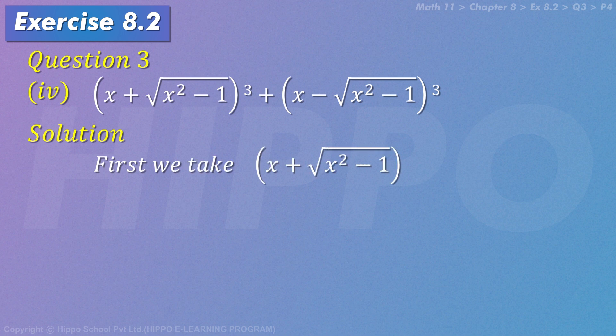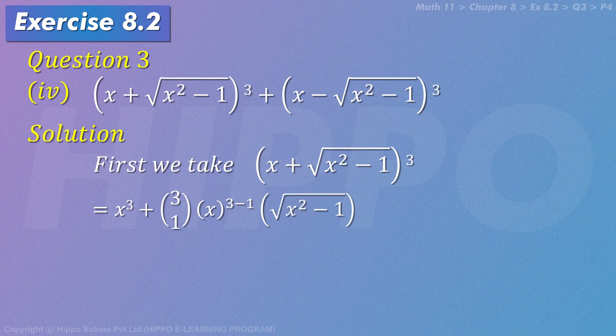So (a + b)³, that's a³ + b³, but we are doing it with binomial expansion. So what do we need to do? First, x³ plus ³C₁ x^(3-1) √(x² - 1).